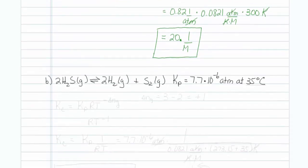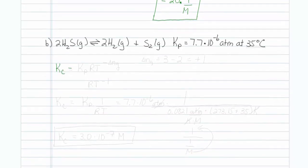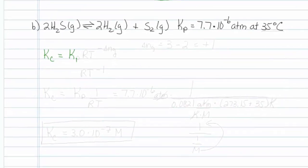Let's try the next one. Kc equals Kp RT to the minus delta NG. My delta NG, I have three moles of gas, and I'm going to two moles of gas. So this time my delta NG is plus one, so I'm really going to take this RT to the minus one, which is essentially like dividing by RT. So for this particular one, my Kc is going to be equal to Kp times one over RT.